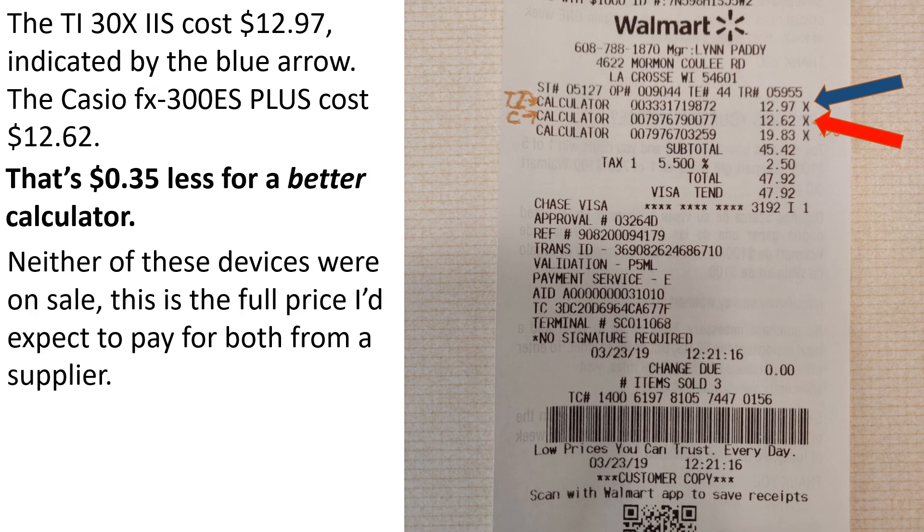Now let's talk about the cost. The TI-30 XIIS costs $12.97, indicated by the blue arrow. The Casio FX300ES Plus costs $12.62. That's $0.35 less for a better calculator. Either of these devices were on sale. This is the full price I'd expect to pay for both from a supplier.